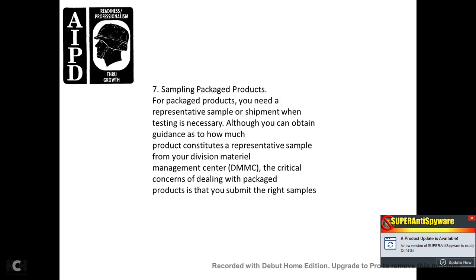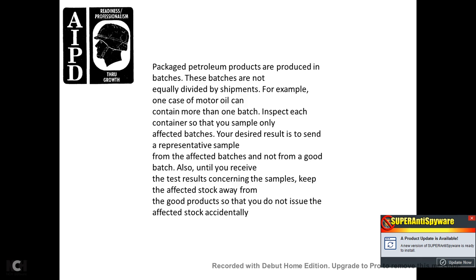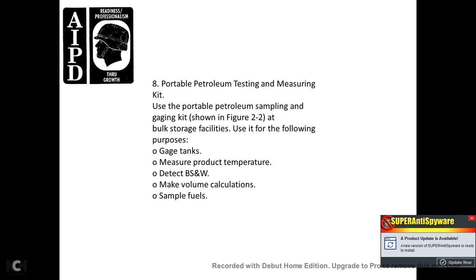7. Sampling packaged products. When you need a representative sample of a shipment for testing, consult your division materiel management center (DMMC) for guidance on how many containers constitute a representative sample. Packaged petroleum products are produced in batches, which may not be equally divided among shipments. For example, one case of motor oil may contain more than one batch. Inspect each container and sample only affected batches. Keep affected stock away from good products so you do not accidentally issue the affected stock.